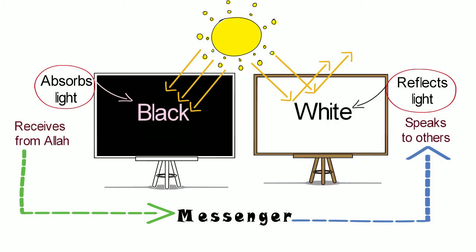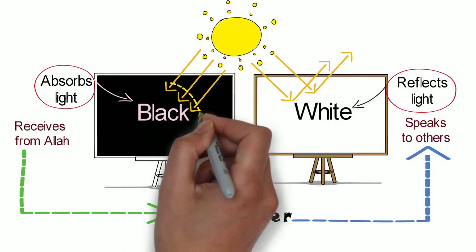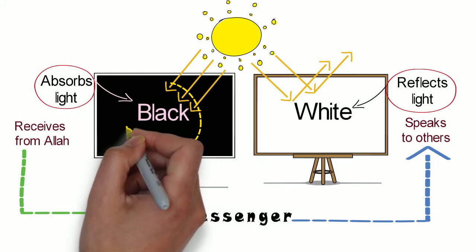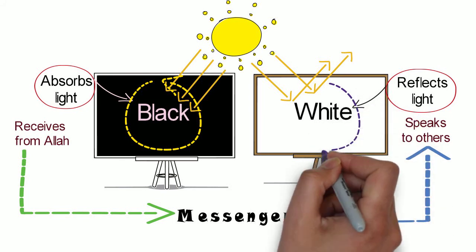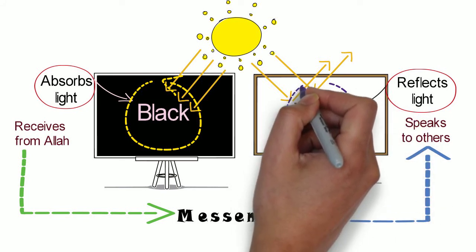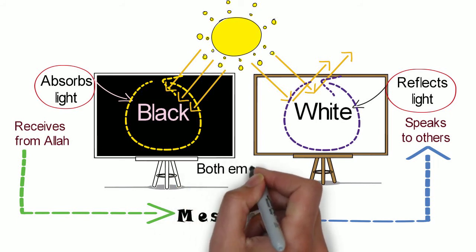So reception—that is complete reception without leaving anything out. And reflection—that is complete reflection without leaving anything out. They are witnessed only in two colors: black and white.